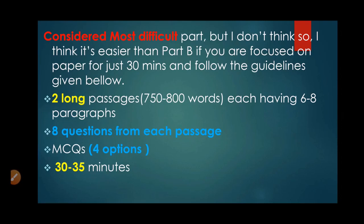You have to identify first those two options which are out of the paragraph, out of the text. Then you identify the wrong option. After this, you will have only one option left and it will be your answer. You will have 30 to 35 minutes to solve these long passages, meaning 15 to 17 minutes for each passage to answer eight questions.